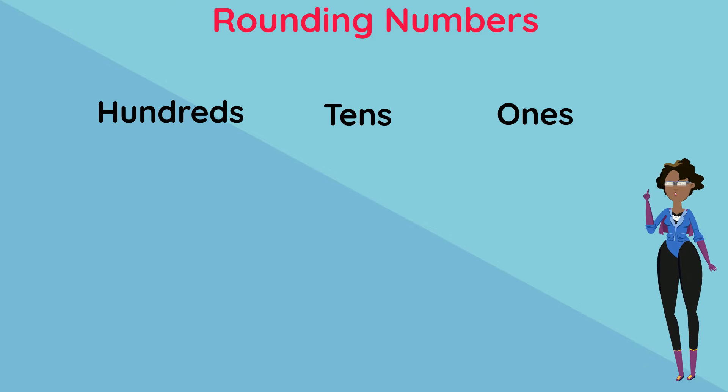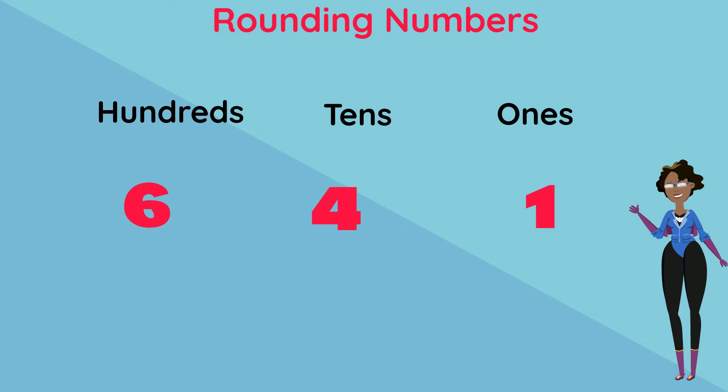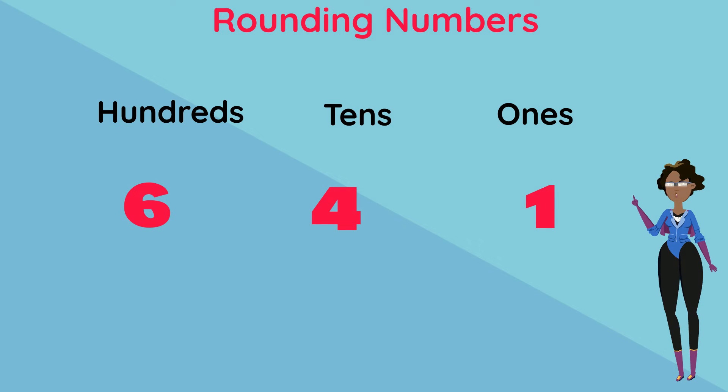Rounding numbers to the nearest 100 means finding which 100 they are nearest to. Let's look at the steps to rounding a number to the nearest 100.